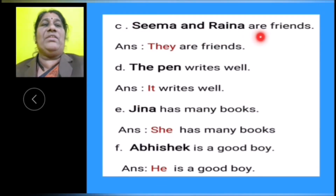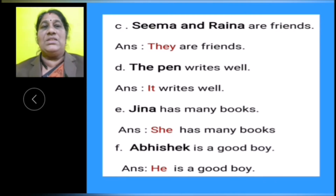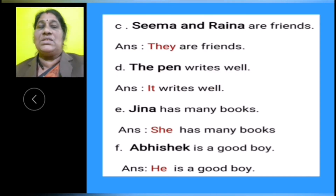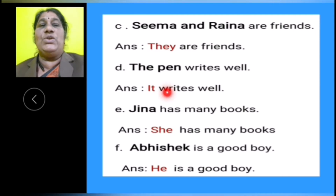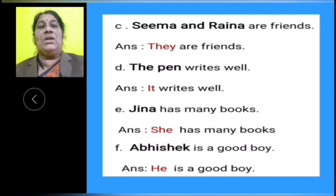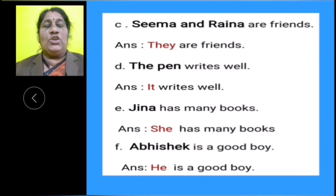C: Sima and Raina are friends. Sima and Raina is the subject. In place of Sima and Raina, the pronoun they is used — they are friends. D: The pen writes well. The subject is the pen, so in place of the pen, pronoun it is used — it writes well. E: Jina has many books. The subject is Jina, so in place of Jina, she is used — she has many books. F: Abhishek is a good boy. The subject is Abhishek, so in place of Abhishek, we use pronoun he.